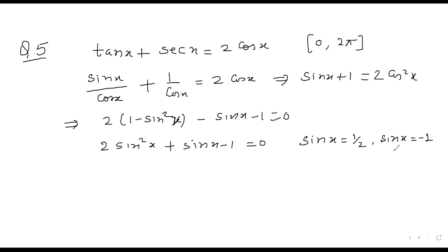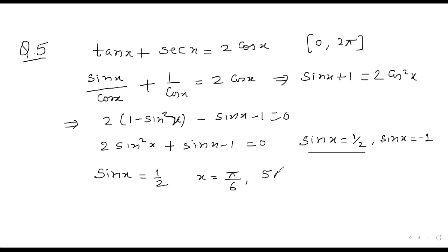On factorization, we get sin x = 1/2 and sin x = −1. For sin x = 1/2, x = π/6 and 5π/6. For sin x = −1, x = 3π/2.